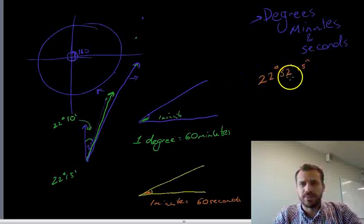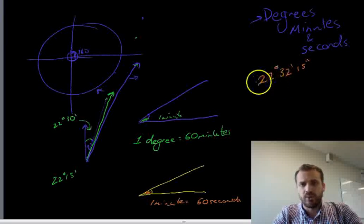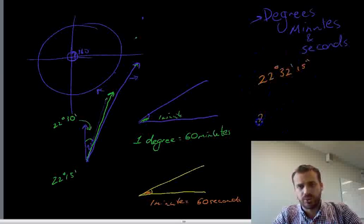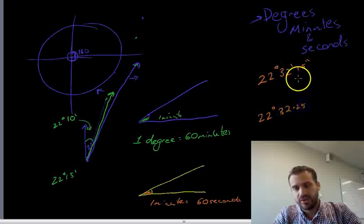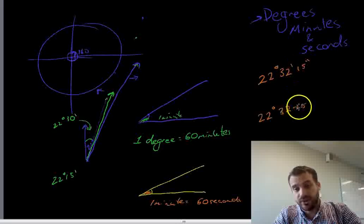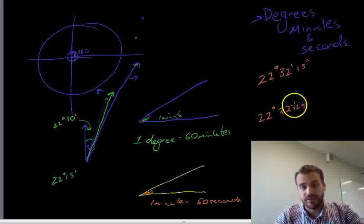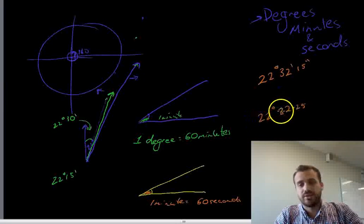luckily for us, we're not really going to deal with seconds too much. We're going to deal with degrees and minutes, largely. So, when we're doing this stuff, we're going to say 22 degrees, 32.25. 15 seconds is the same as 0.25 minutes. So, we're going to say 22 degrees and 32.25 minutes.